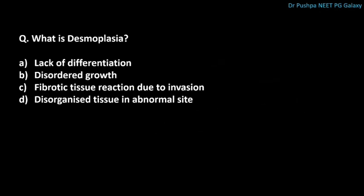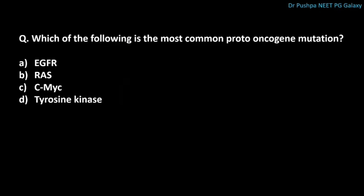What is desmoplasia? The correct answer is fibrotic tissue reaction due to invasion. Disordered growth is called dysplasia. Lack of differentiation is called anaplasia. Which of the following is the most common proto-oncogene mutation? The correct answer is RAS.